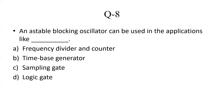The next question: an astable blocking oscillator can be used in applications like: Option A — frequency divider and counter; Option B — time-based generator; Option C — sampling gate; Option D — logic gate. An astable blocking oscillator is used as a frequency divider and counter. So the correct answer is Option A: frequency divider and counter.